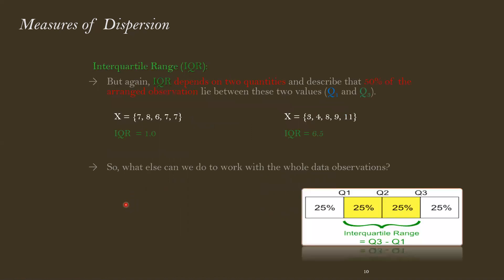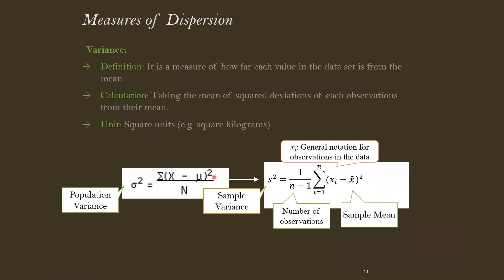Although IQR is a good measure when dealing with skewed data, the problem is that it is based on only two quantities covering 50% of the dataset — from the 25th to the 75th percentile, which is 75 minus 25 equals 50%. We want a quantity that covers all data observations.